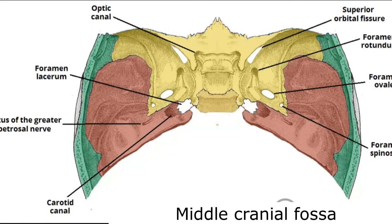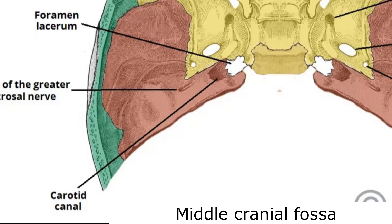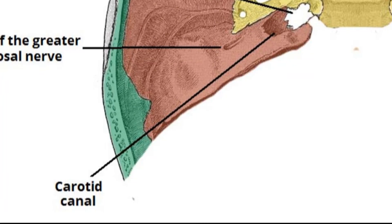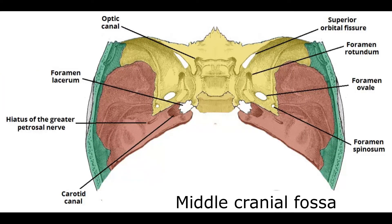There is also the carotid canal, which is an inlet for the internal carotid artery. So to recap: Only Some Rabbits Obey Senior Hairs — optic canal, superior orbital fissure, foramen rotundum, foramen ovale, foramen spinosum, and hiatus of the greater petrosal nerve.